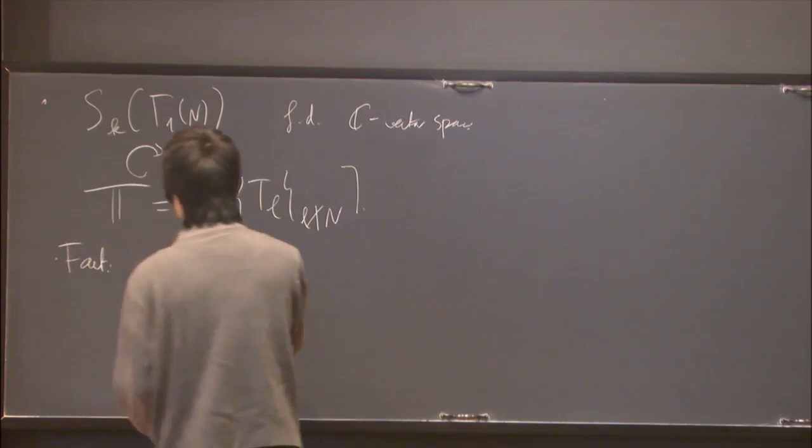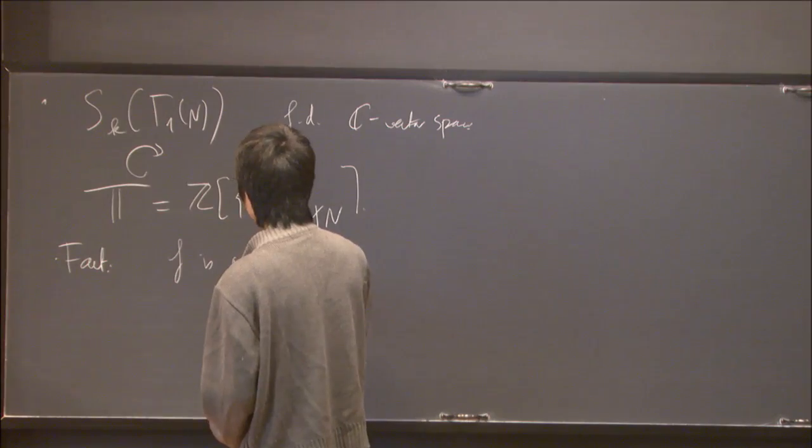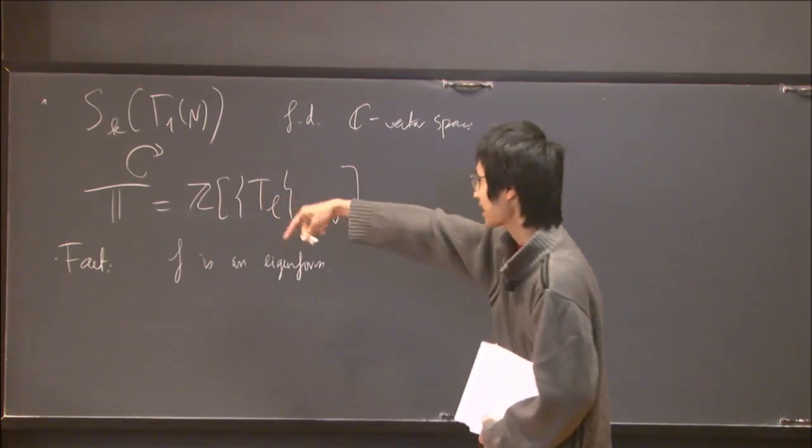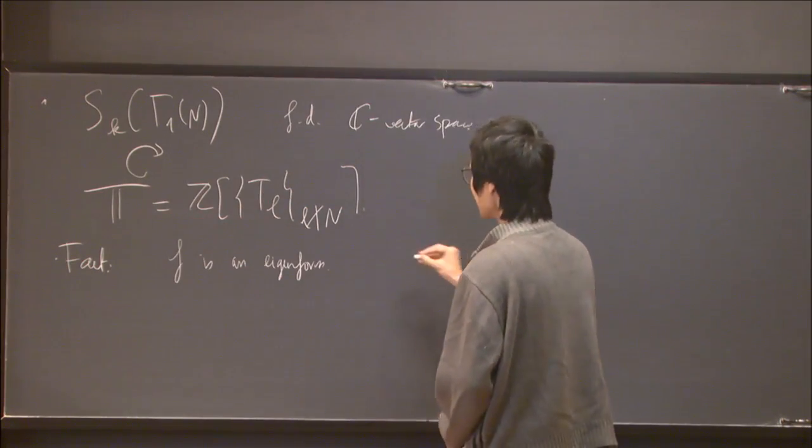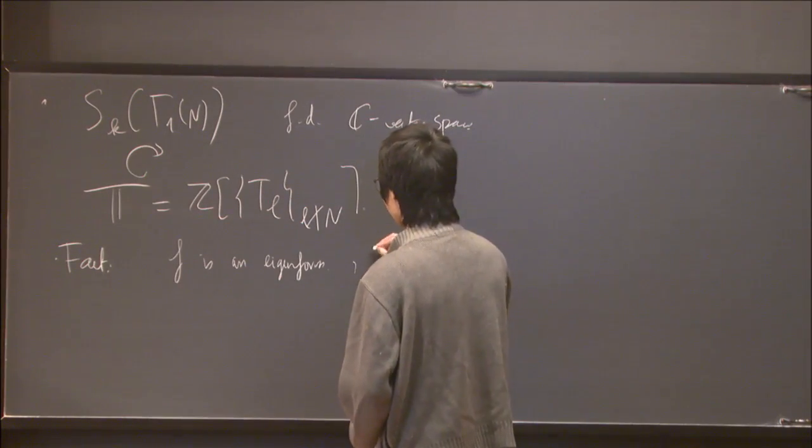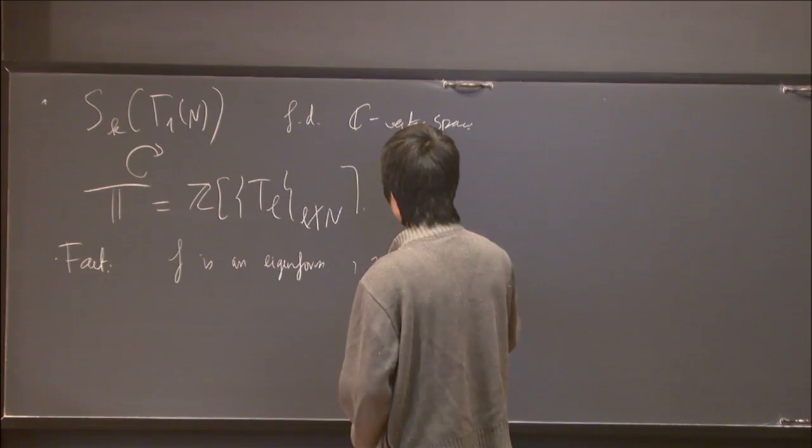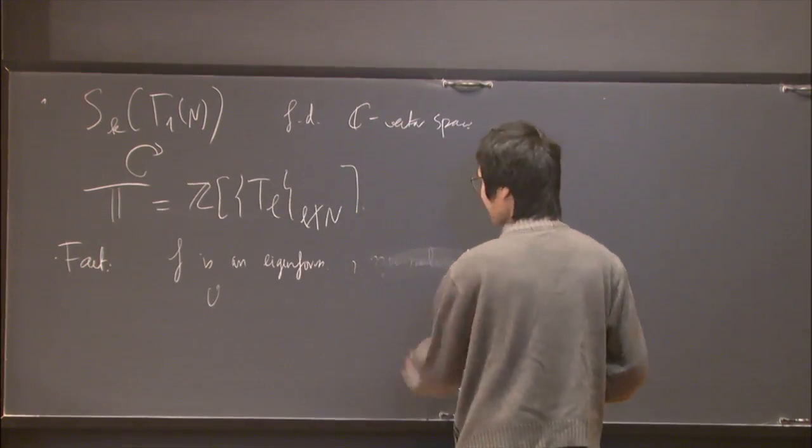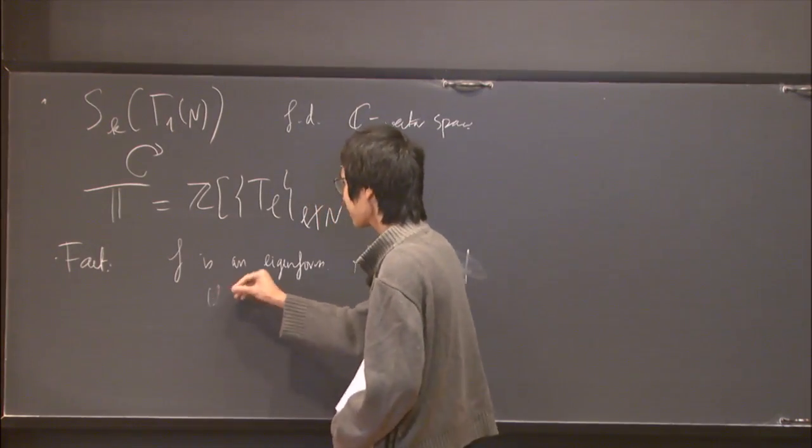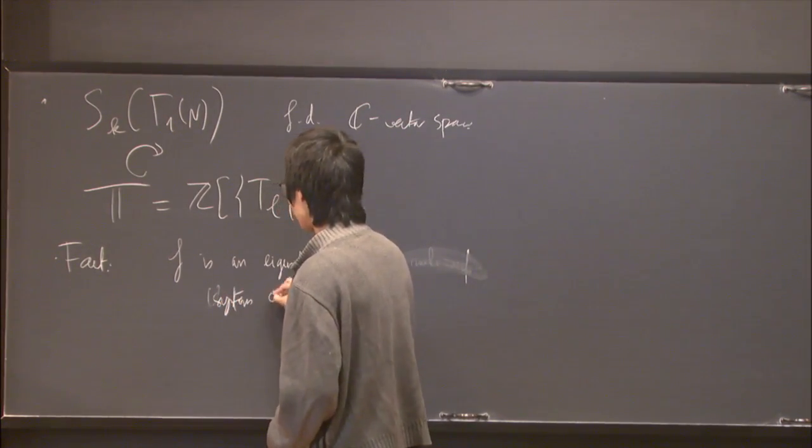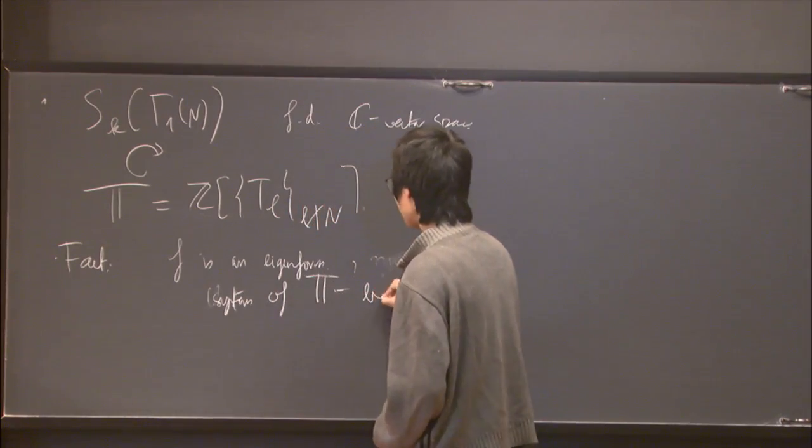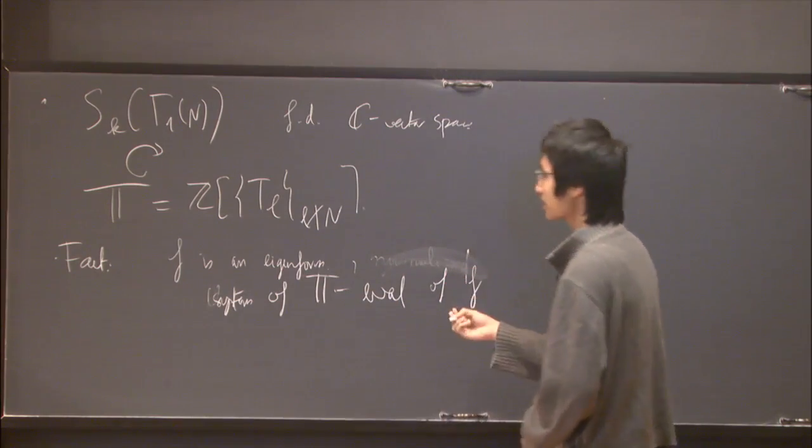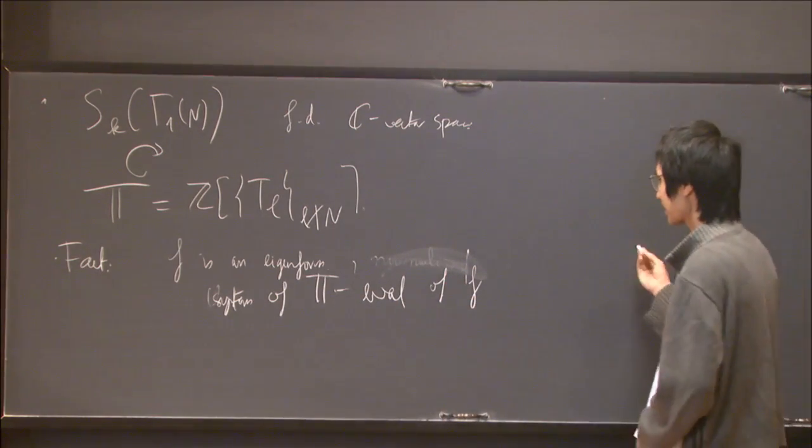it's a basic fact that if f is an eigenform, so it's an eigenvalue for the action of all these operators, then the system of Hecke eigenvalues that f admits are not random complex numbers, but they're actually algebraic integers.